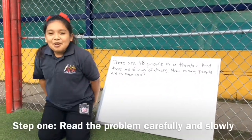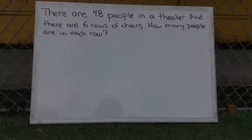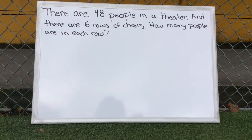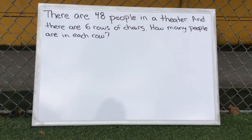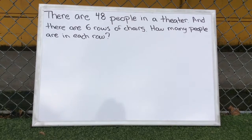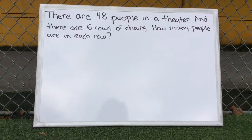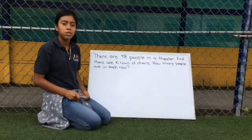Step one, we have to read carefully and slowly. There are 48 people in a theater and there are six rows of chairs. How many people are in each row? Step two,